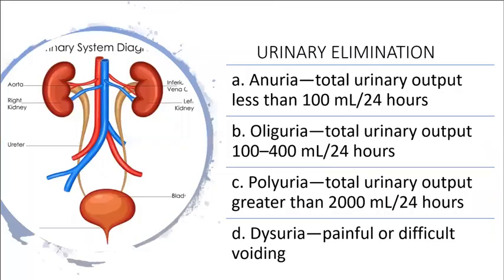Some important terms for urinary elimination: anuria is when total urinary output in 24 hours is less than 100 mL. Oliguria is when total urinary output is between 100 to 400 mL in 24 hours. Polyuria is when total urinary output is greater than 2,000 mL in 24 hours. Dysuria refers to painful or difficult voiding.